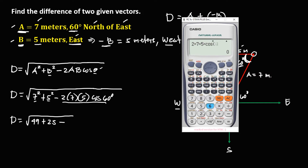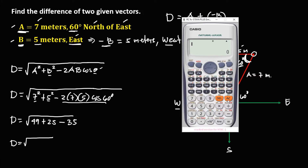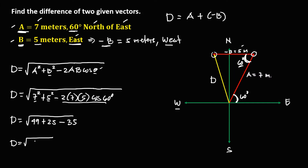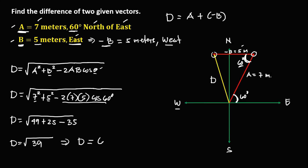Simplifying: 2 times 7 times 5 times cosine 60 equals 35. So we have the square root of 49 plus 25 minus 35, which equals the square root of 39. So D equals 6.24 meters. This is the difference of these two vectors.